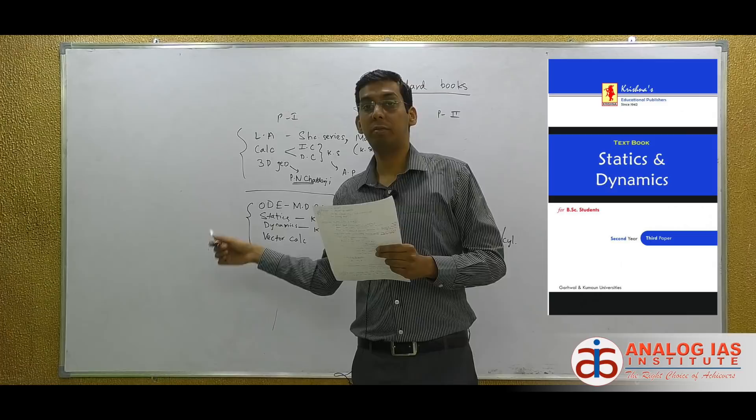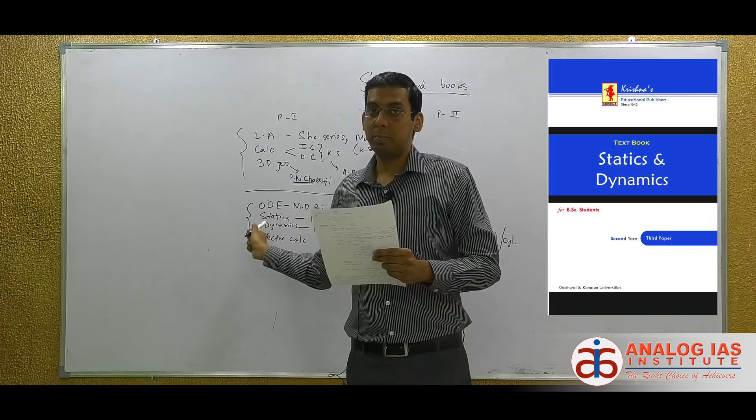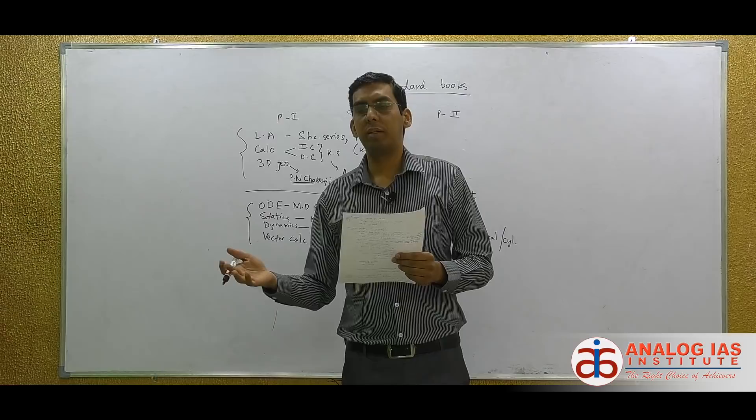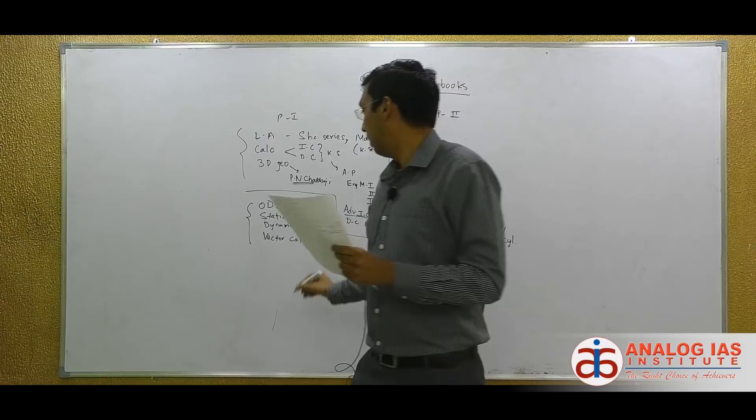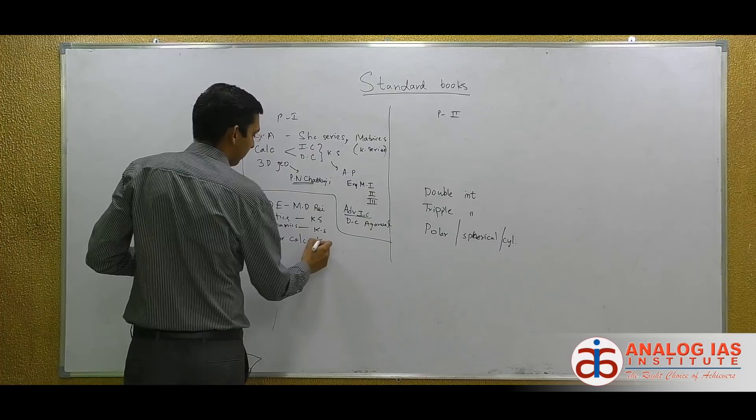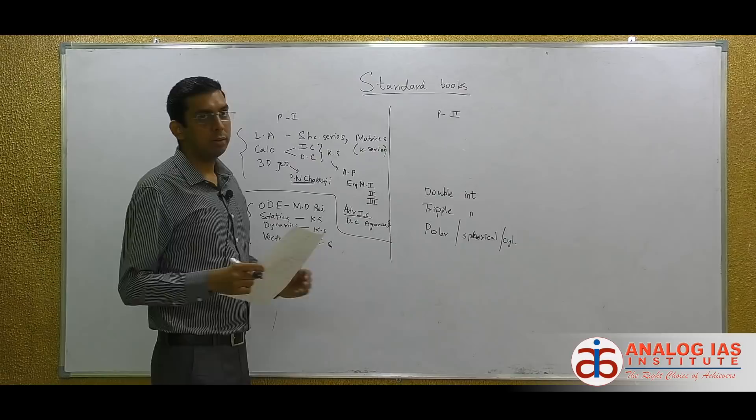These areas can produce 10 markers. Last year there was a 17-marker question which came from the physics part, so don't neglect these areas. They are not very difficult. All of you who did physics in 11th and 12th class and were good at it should be able to handle these. Then for Vector Calculus, again there is a book by Krishna series — Krishna series Vector Calculus.